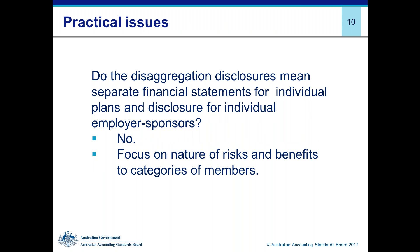Where there are a range of types of members in a superannuation plan, there is a requirement in the standard — paragraph 32 — that requires the disaggregation of disclosures in order to provide information relating to the risks and benefit arrangements relating to different categories of members. Importantly, the requirement is to explain risks and benefit arrangements relating to different categories of members — there is no requirement to identify this information according to different employer plans or sub-plans.